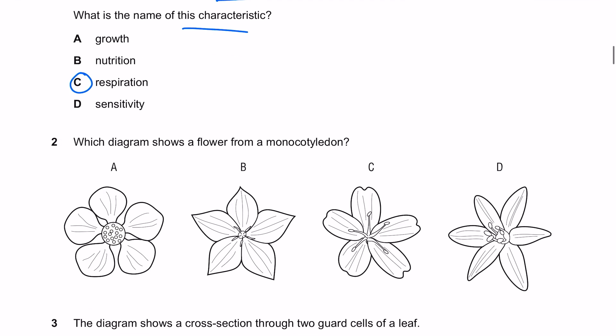Which diagram shows a flower from a monocotyledon? Remember with monocotyledons the petals are in multiples of three and the leaves have parallel veins. Make sure you count all the petals - we have five here, five here, five here, six here. The answer here is D.